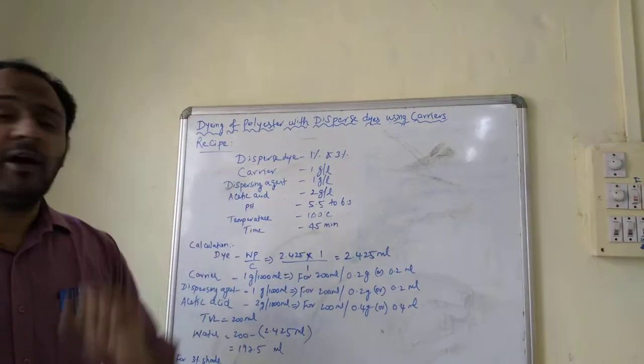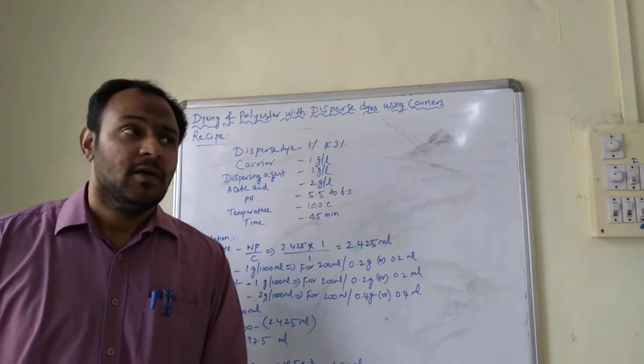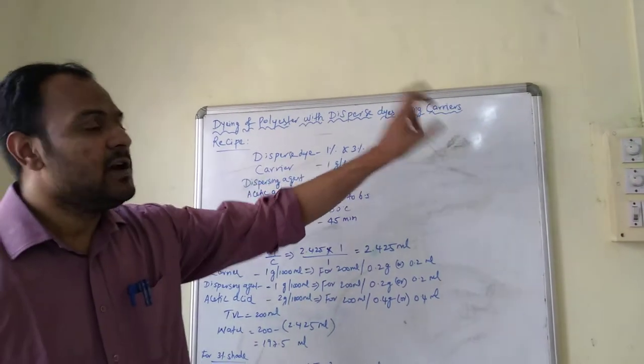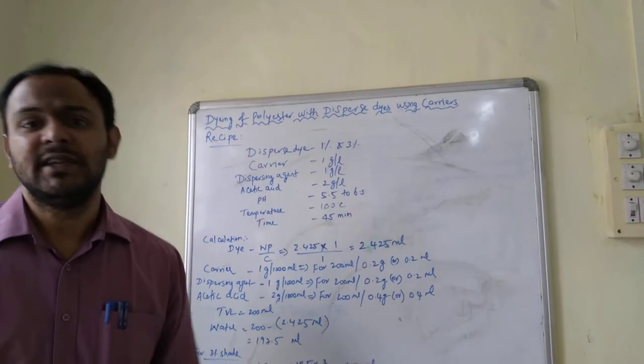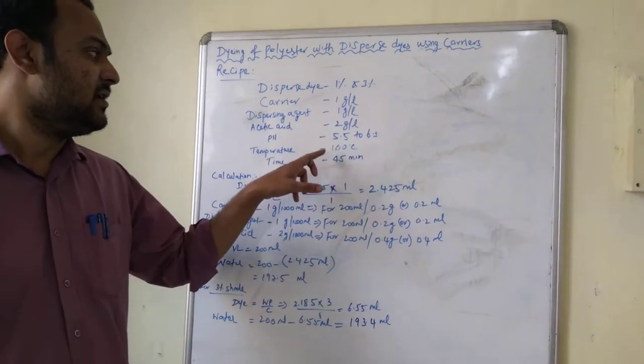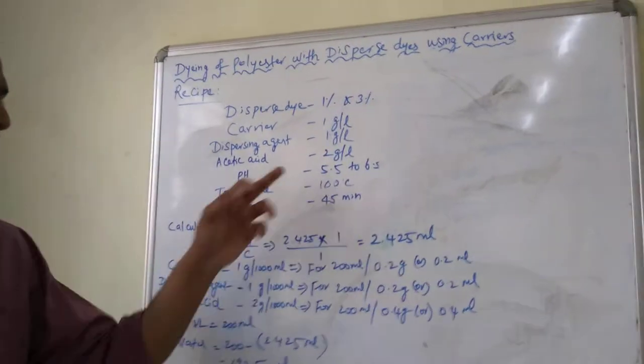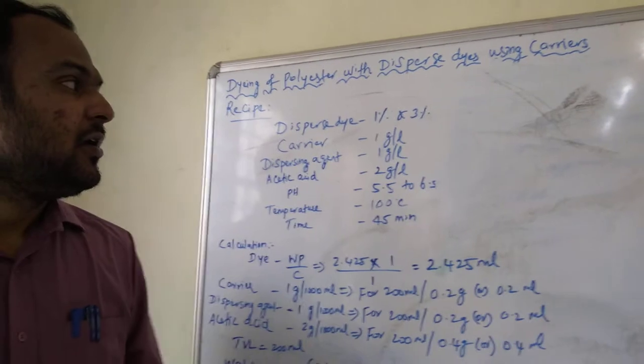Normally the dyeing of polyester is carried out at 130 degrees centigrade. But when you use the chemical called carriers, you can reduce the temperature of dyeing. For example, this carrier dyeing can be performed at 100 degrees centigrade at boiling temperature.